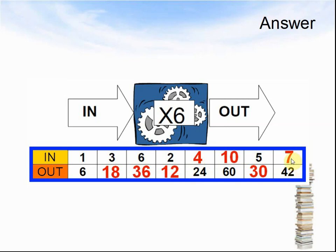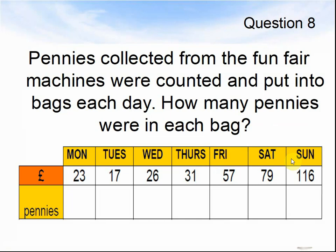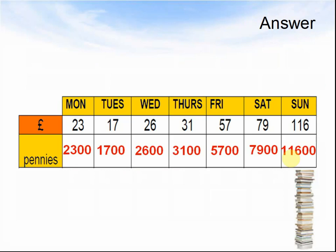Let's look at the questions. Question 8. Pennies collected from the funds and machines were counted and put into bags every day. How many pennies were in each bag? Pause the video until you have the answers. Here comes the answers. In each case the numbers were 100 times bigger, so I had two zeros at the end. For example, 23 became 2,300. 17 became 1,700. 26 became 2,600. 31 became 3,100. Fridays, 57 became 5,700. 79 became 7,900. And Sunday's 116 came to 11,600.